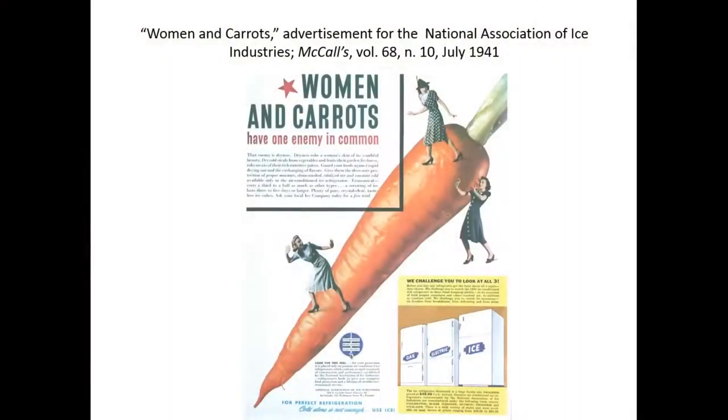Consider this other image — women in carrots. You have this oversized carrot and minuscule women. After reading the elaborate textual inserts, you find that women and carrots have the same enemy in common: dryness. The product — a refrigerator — is very small in essence. The story being told is that the refrigerator keeps carrots fresh and moist, so the woman's skin will be fresh. There's no tampering with the contours of the objects themselves — overlapping, but no tampering.